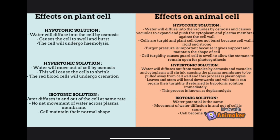For the effects on plant cells: in a hypotonic solution, water will diffuse into the vacuoles by osmosis, causing the vacuoles to expand and push the cytoplasm and plasma membrane against the cell wall. The cells become turgid. The plant cell does not burst because the cell wall is very rigid and strong. Turgor pressure is important as it gives support and maintains the shape of the cell, and cell turgidity causes guard cells to swell, keeping stomata open for photosynthesis.